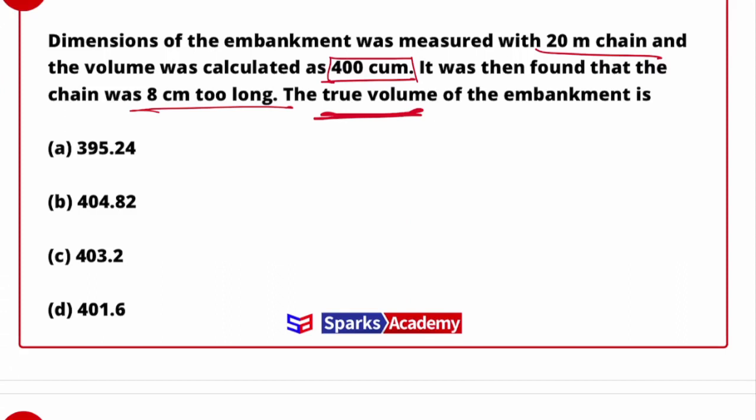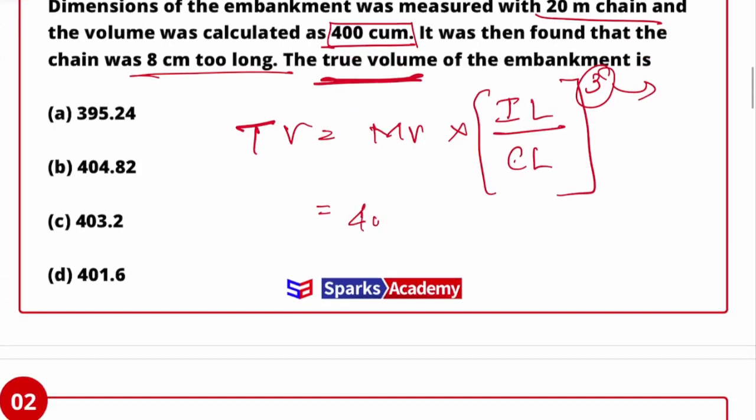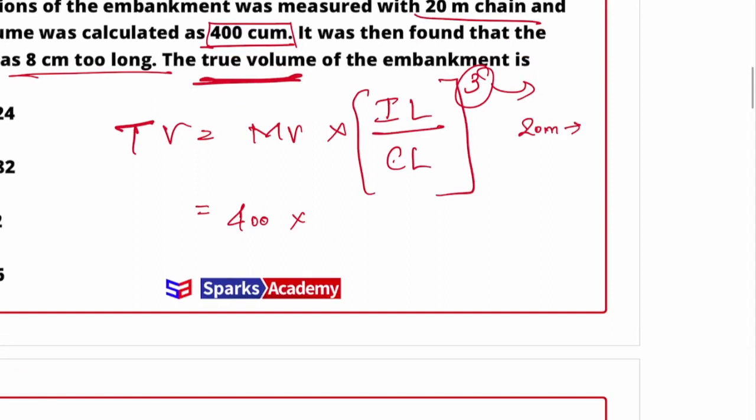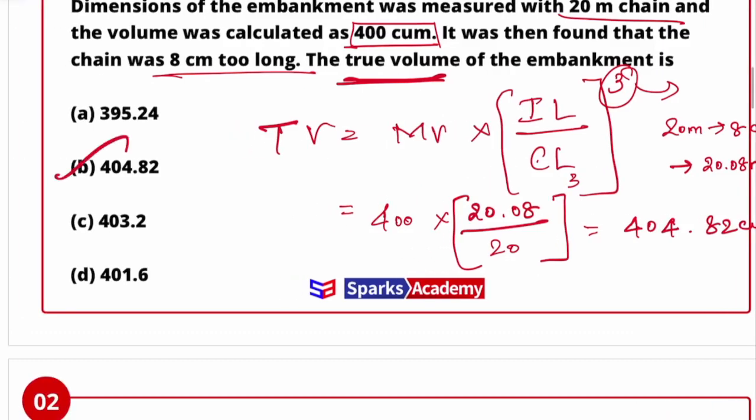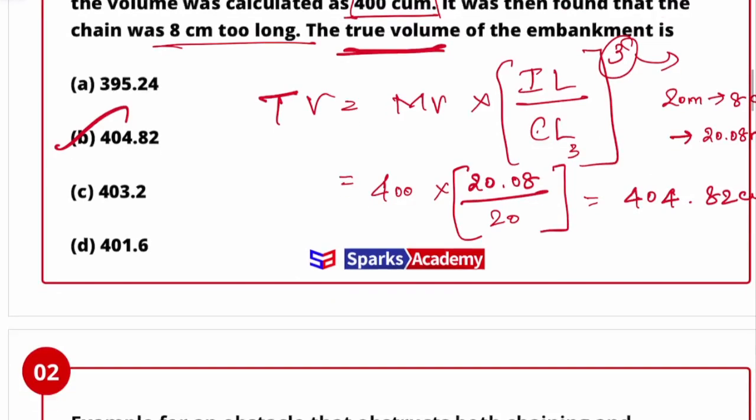If we need the true area or true volume, we calculate using the formula: True volume equals measured volume times incorrect length divided by correct length. Since we're dealing with volume, we have to cube this ratio. So we put the volume of 400 times the incorrect length of 20.08 divided by 20, the whole cube. The answer is 404.82 cubic meters, which is option B.